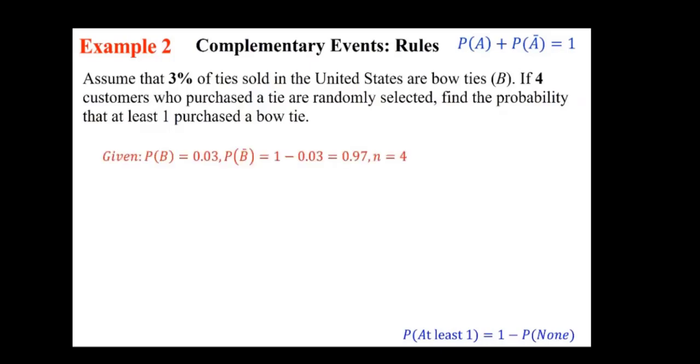Let's write what's given. Probability of B, and B stands for the bow tie. The probability of getting bow ties would be 0.03 or 3%, and therefore the complementary event for that, probability of B', would be 97%. And in this case, n equals 4.